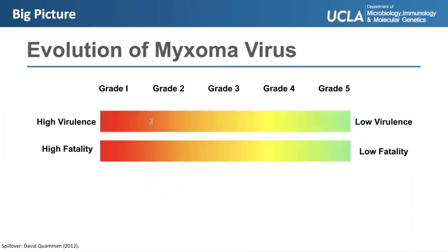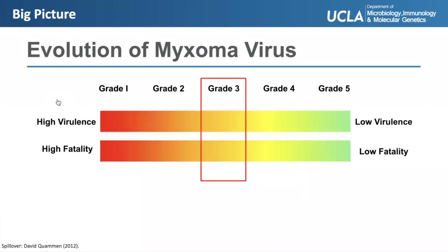Mutations in immunomodulatory proteins led to differences in virulence among known myxoma virus strains. The original standard laboratory strain first released to rabbits in Australia, dubbed the grade 1 strain, had a fatality rate of 99.6% — the highest. After 30 years of evolution, researchers found more strains that varied in fatality rate, numbered according to decreasing fatality rate. When tracking the prevalence of these strains, the grade 3 strain had the highest prevalence at 67% of the infected rabbit population. This is because grade 1 strains were highly virulent but killed the host rabbit too quickly, leaving infectious lesions available for only a few days. Grade 5 strains allowed the host to live longer but lost virulence as a consequence.